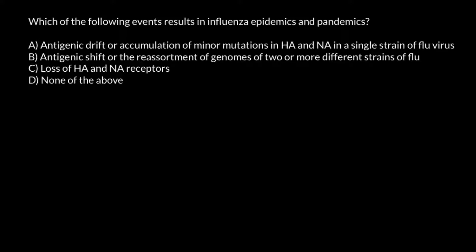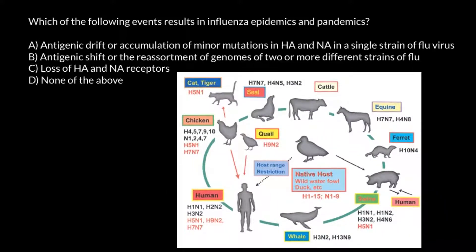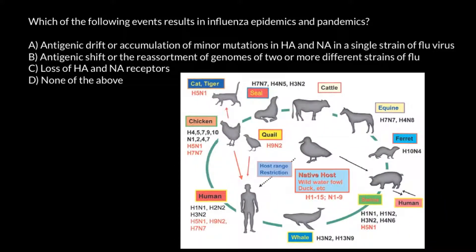Looking at this picture, you can see that influenza virus occurs not only in humans, but in a broad range of animals. Wild birds have the most variants of this virus, and so wild birds are considered to be a reservoir of this virus.